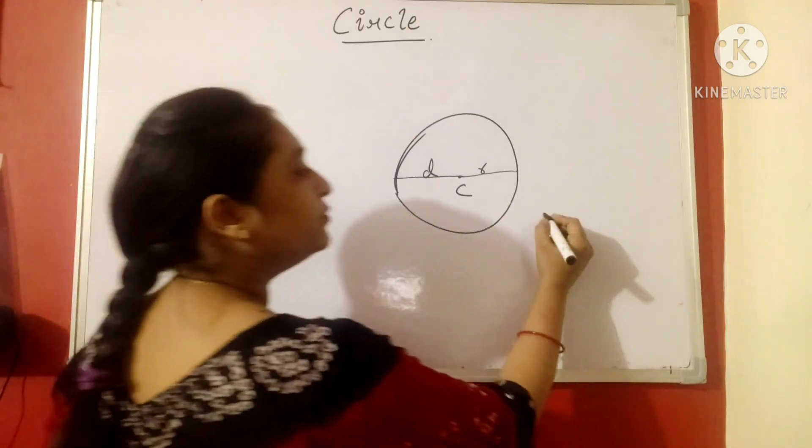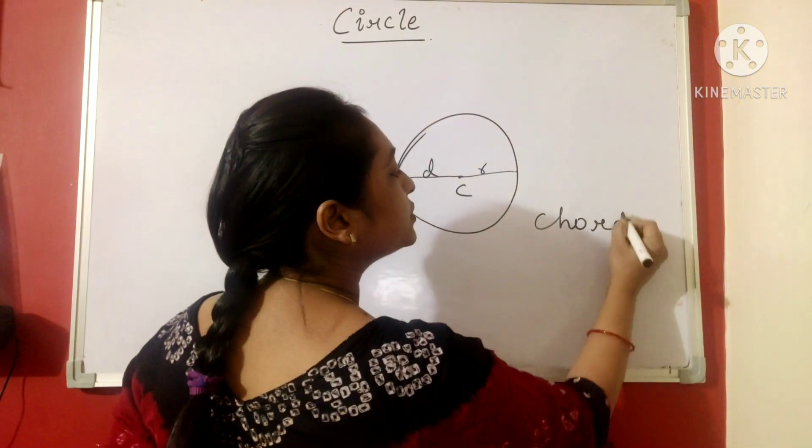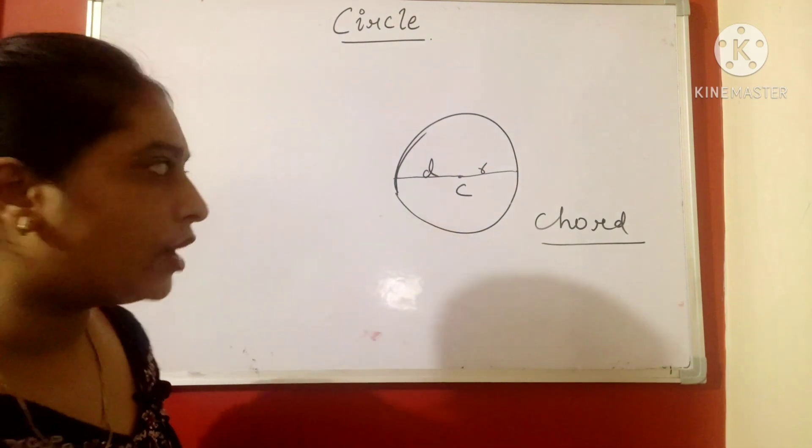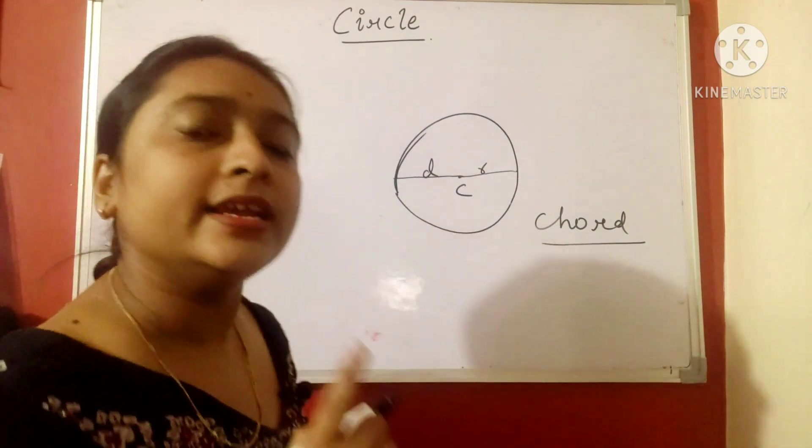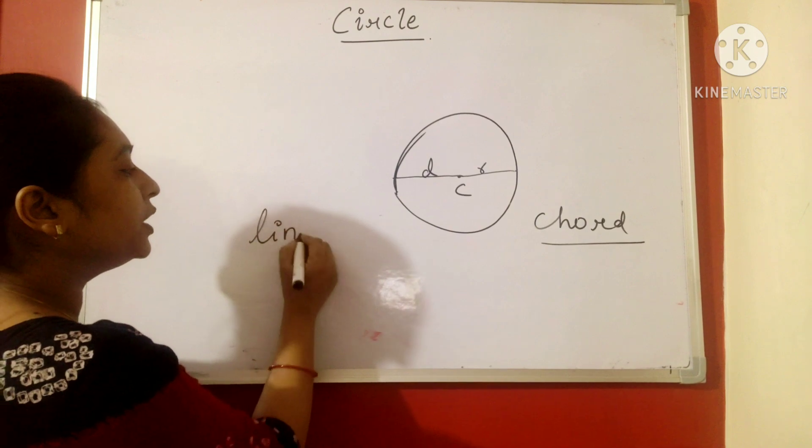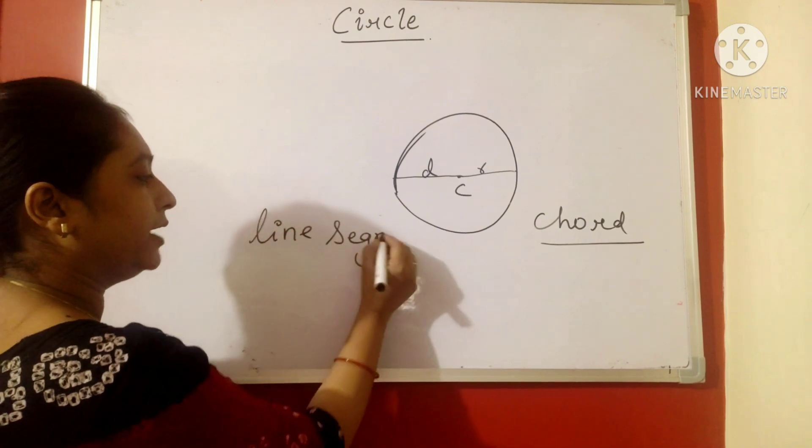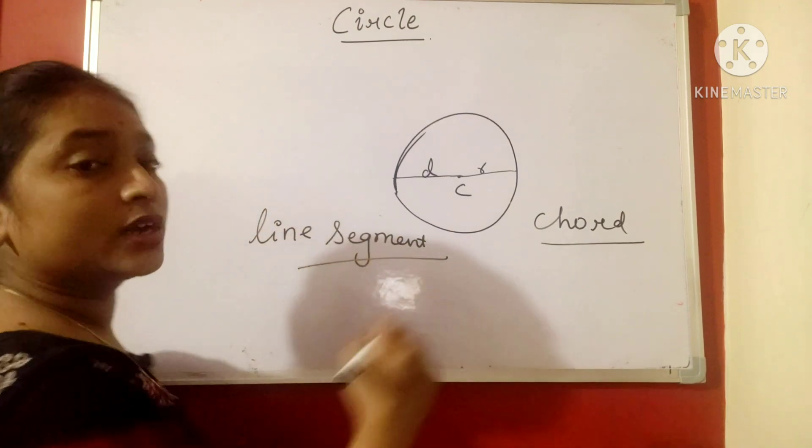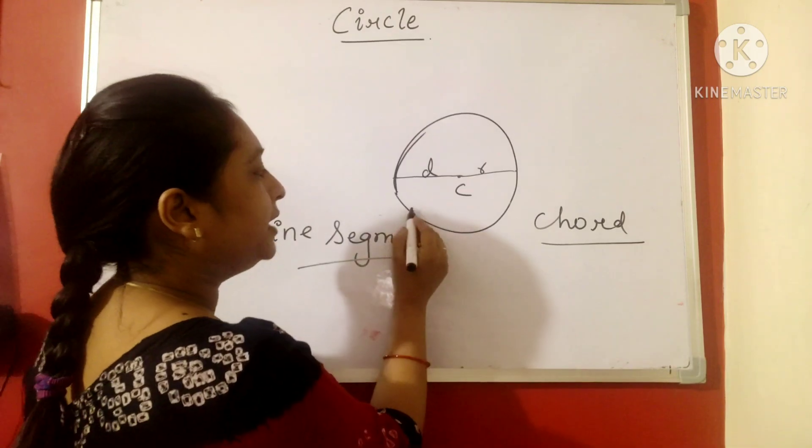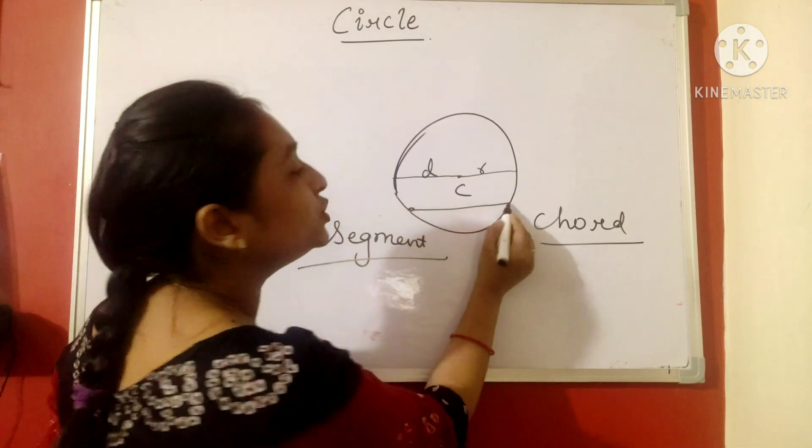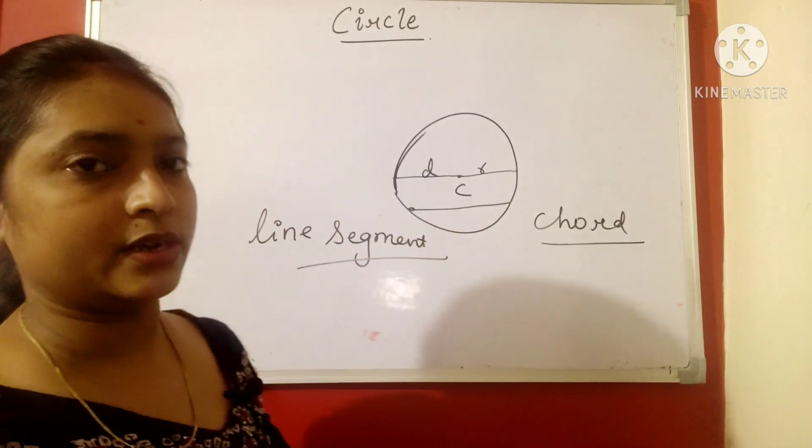Now one word we will be learning, that is chord. What is a chord? Chord is a line segment. Just mind, I am using the word line segment. So chord is a line segment that meets the two points of the circle.